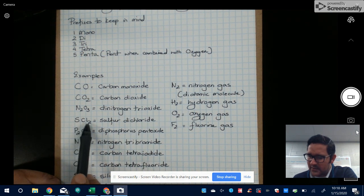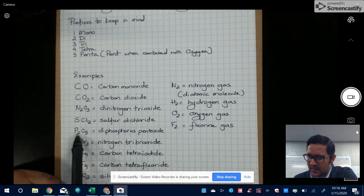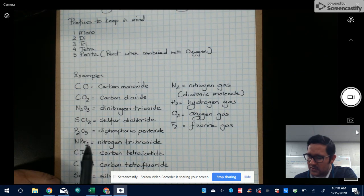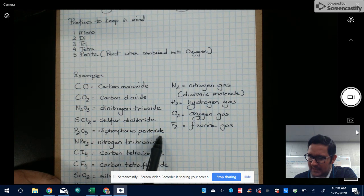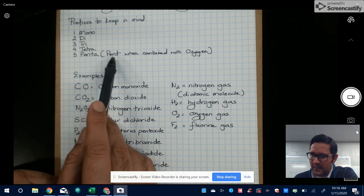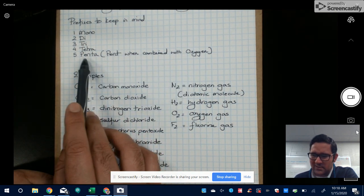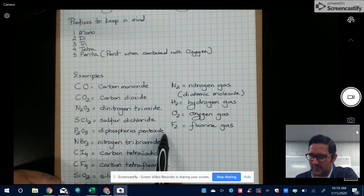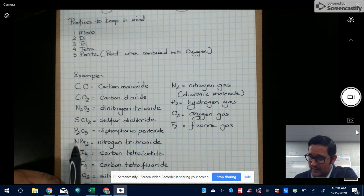There's one sulfur here and two chlorine. So it's sulfur dichloride. There's two phosphorous here. There are two phosphorous elements in here and five oxygen. So we're going to call it diphosphorus pentoxide. You remember earlier I said five is penta, but when you're dealing with oxygen, you don't say penta, you say pent, and then you add the oxide part. This example has one nitrogen and three bromines. So it's nitrogen tribromide.